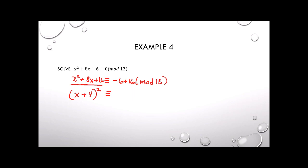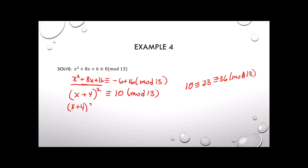So now we have (x plus 4) squared congruent to 10 mod 13. We want a perfect square on the right-hand side too. We use the same trick: 10 is congruent to 23, which is congruent to 36, mod 13. So we have (x plus 4) squared congruent to 36 mod 13.